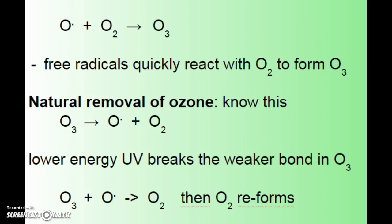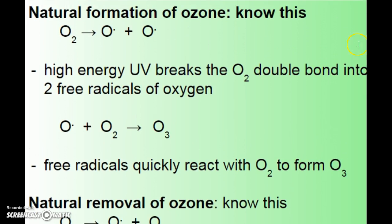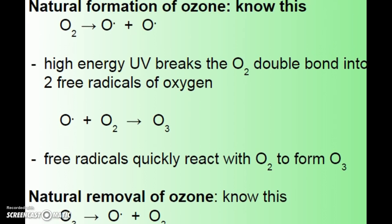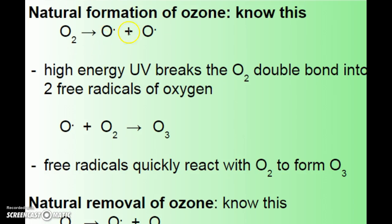The natural formation of ozone is much like the haloalkane process, where high energy UV breaks the O2 bond and forms two free radicals. Remember with the haloalkanes, we looked at chlorine or bromine being broken into two free radicals — the same thing happens with oxygen. Those two free radicals are then available to combine with an O2 molecule and form O3. The rate-limiting step is where the UV rays break up the O2, but that happens pretty easily.